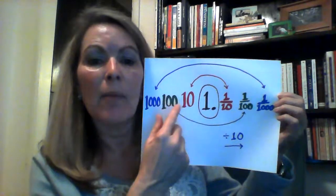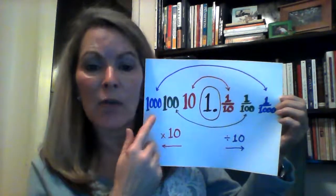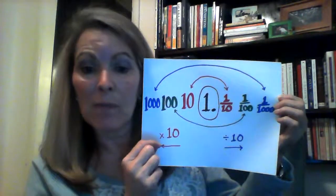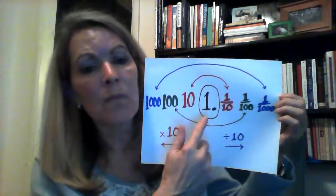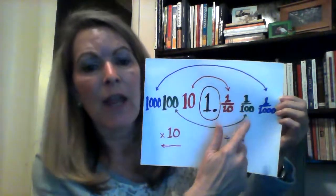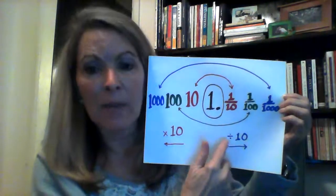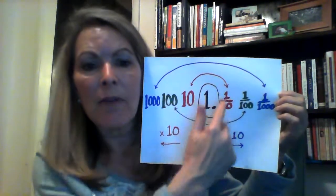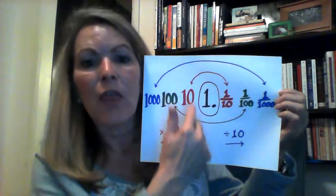You can see how each place value, as you're moving in this direction, has its value multiplied times ten. And if you move in this direction, the value is divided by ten. But all of it balances around the ones place, the whole unit place.